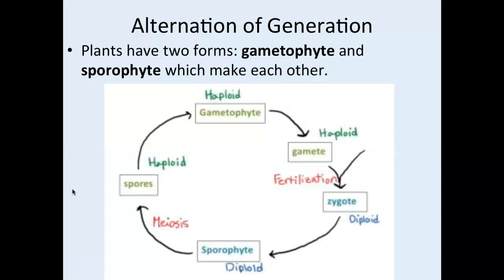Alternation of generations: plants have two different life stages. One is called a gametophyte and the other is called a sporophyte. Gametophytes make gametes and sporophytes make spores. They also make each other — gametophytes eventually turn into sporophytes, and sporophytes eventually turn into gametophytes. They cycle between those two life stages.